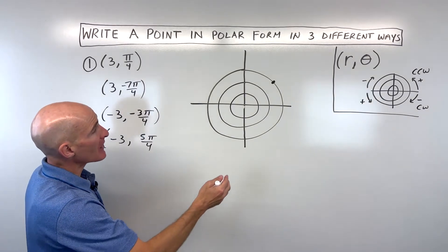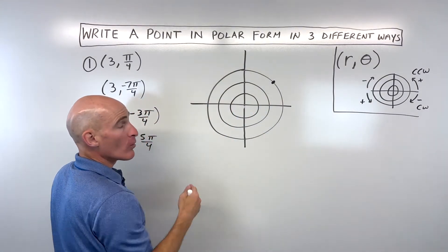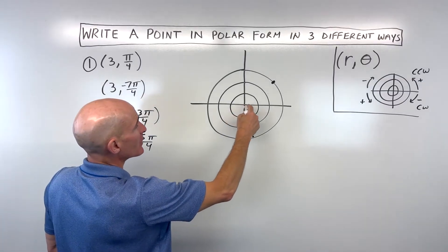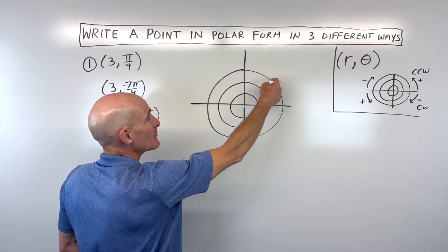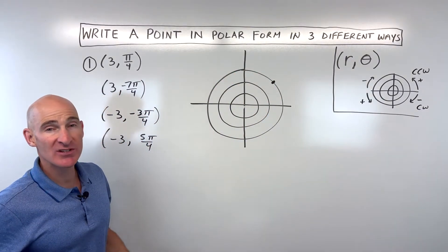You can do this many more times around the circle. For example, I could go right three and rotate a whole number of times. As long as I end up in the same location, it's going to be another representation for that point.